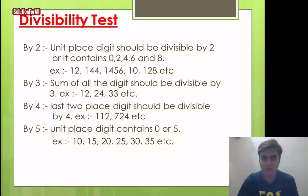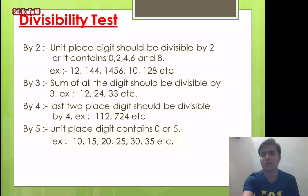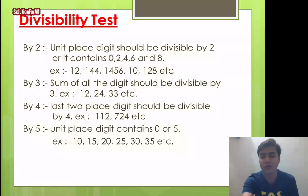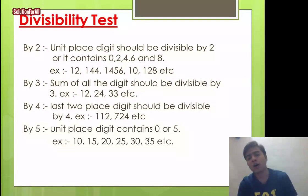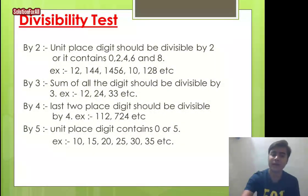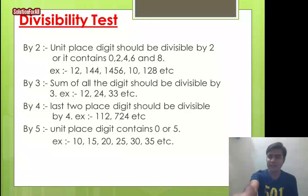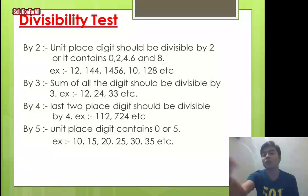Divisibility by 5: the unit place digit must be 0 or 5. Examples: 10, 15, 20, 25, 30, 35, etc. For divisibility by 8: similar to the rule for 4, but the last three digits must be divisible by 8.